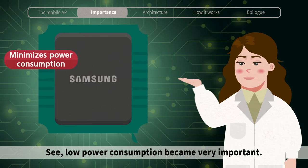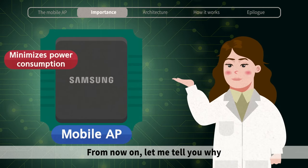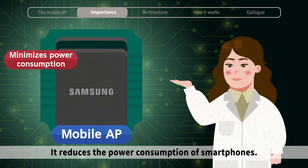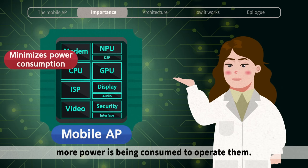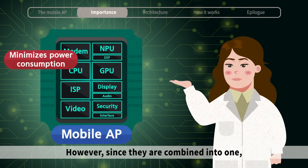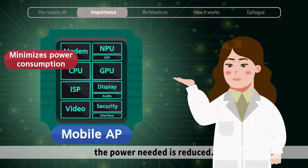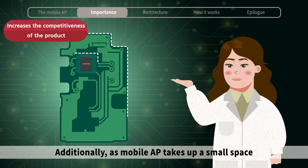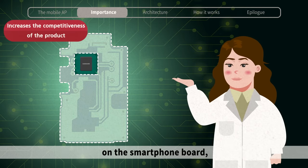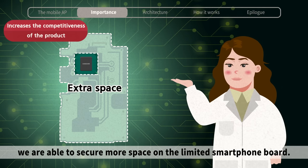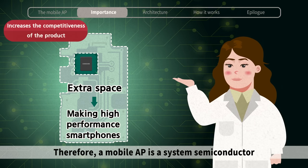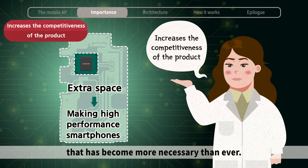Low power consumption became very important. Let me tell you why you have to put various functions into the mobile AP — it reduces the power consumption of smartphones. If there are several chips, more power is being consumed to operate them. However, since they are combined into one, the power needed is reduced. In other words, better power consumption and battery life. Additionally, as mobile AP takes up a small space on the smartphone board, we are able to secure more space on the limited smartphone board. Now you can add more functions to make a high-performance smartphone. Therefore, a mobile AP is a system semiconductor that has become more necessary than ever.